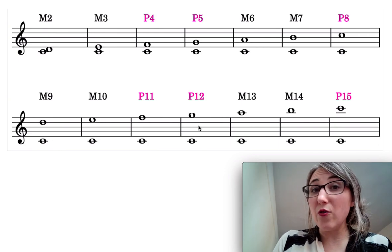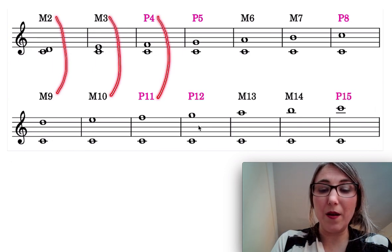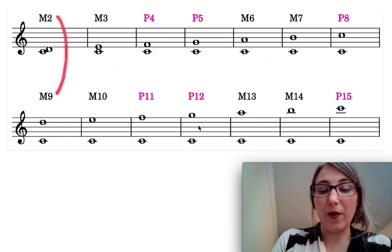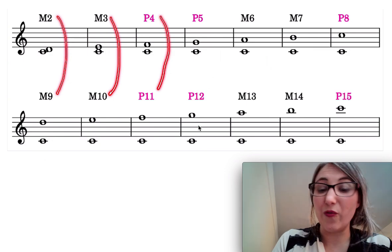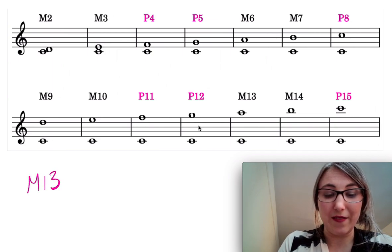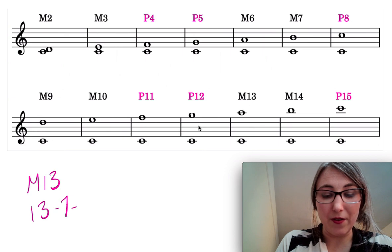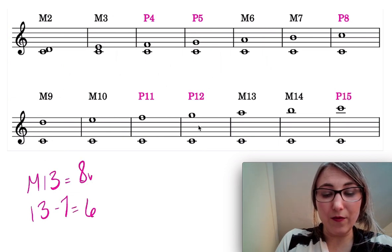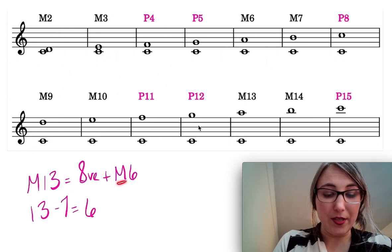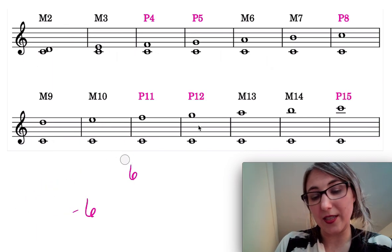Another thing you'll notice is that the relationship between the numbers — the size of the interval — is always seven. If I add seven to any simple version I get the compound version: 2 plus 7 is 9, 3 plus 7 is 10, and so forth. So if I give you a major 13th and ask you to spell it, a 13th is 13 minus 7 equals 6 — a 13th is an octave plus a major sixth. Keep the quality the same and add seven to get the compound version.